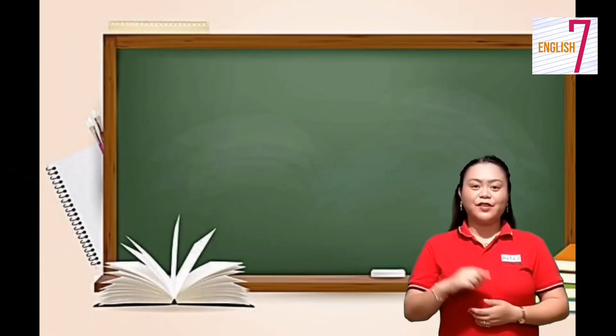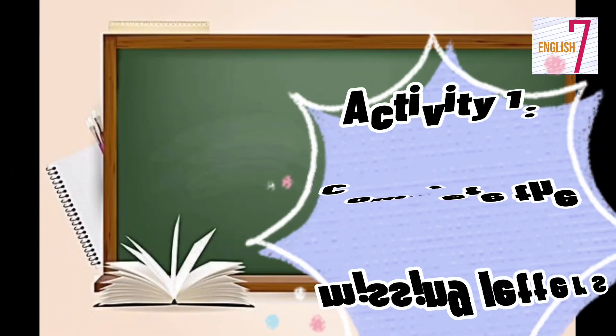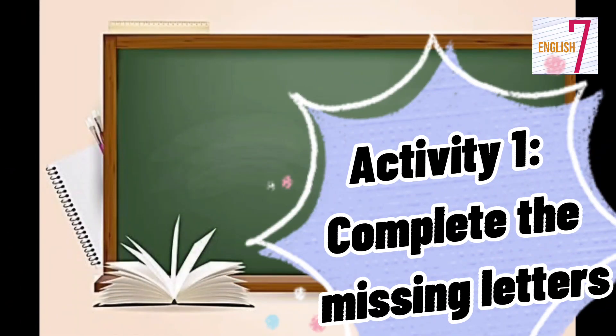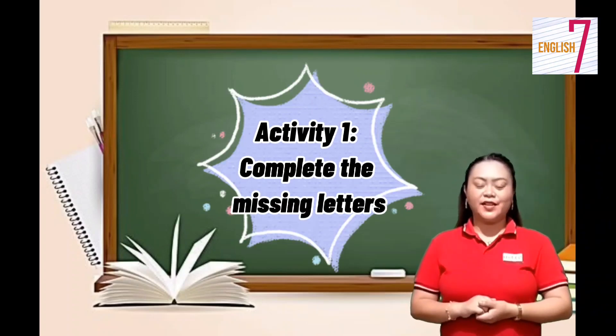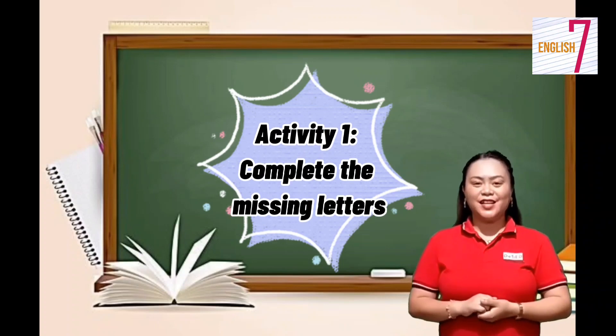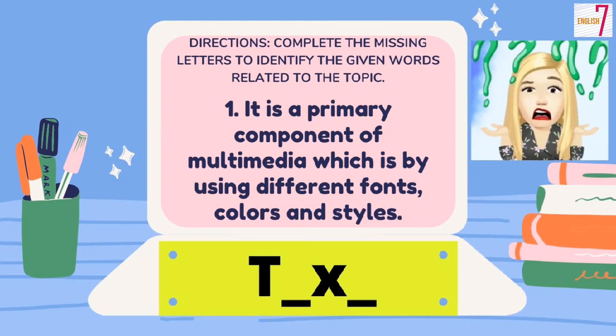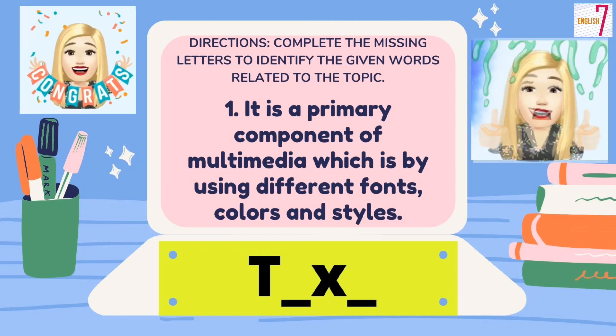For the first activity, we have to complete the missing letters of some words. The definition is already given and we just have to identify it by filling the missing letters in each blank. Number 1: It is a primary component of multimedia, which is by using different fonts, colors, and styles. You get it! It's text.